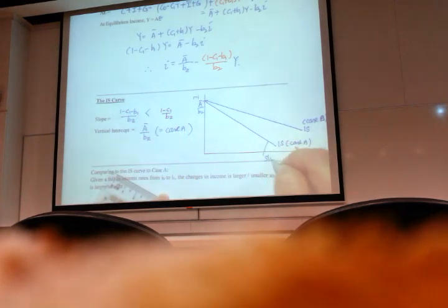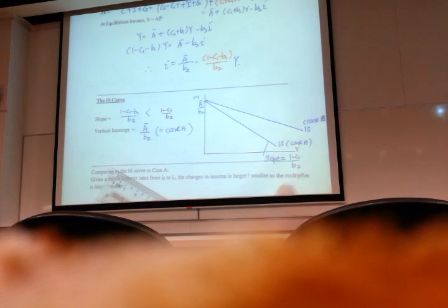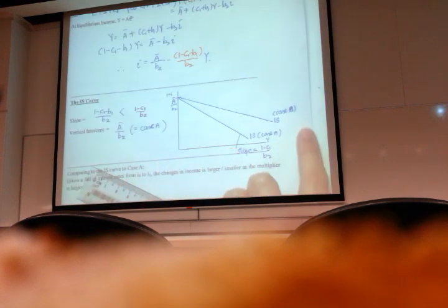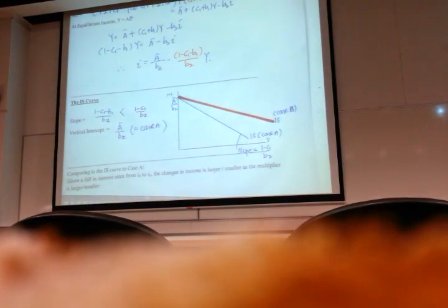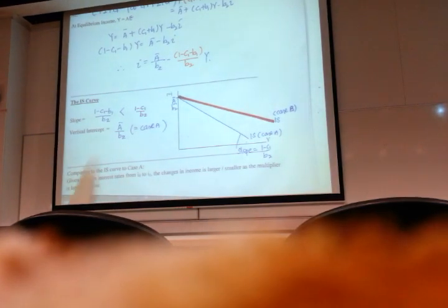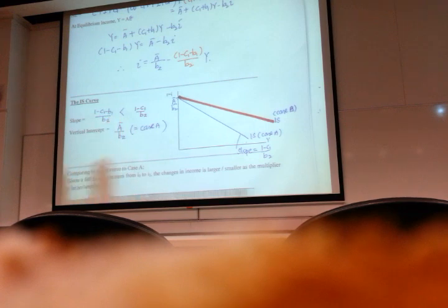Both is A bar over B2. This is the IS for case A. Slope was 1 minus C1 over B2. So now we are doing case B, which should show us a flatter IS. That's case B. Slope now has a minus B1.